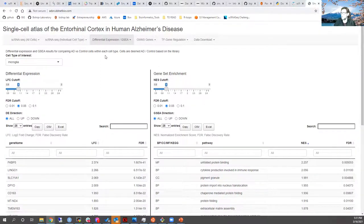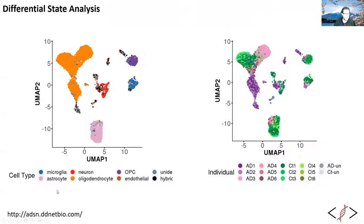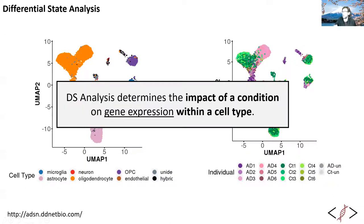The main thing useful about this beyond the visualizations is that they have a data download where you can easily grab the normalized and raw data along with the metadata, which is a really nice thing to include. So back to differential state analysis: it is your attempt to determine the impact of a condition on gene expression within a cell type or cluster — in this case, the impact of Alzheimer's disease on gene expression within microglia.